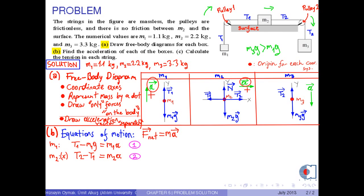Also, for the y-axis, since there is no motion along the y-axis, that is, Ay equals 0, the equation of motion is written to be N minus M2 G equals 0. Then, N equals M2 times G.